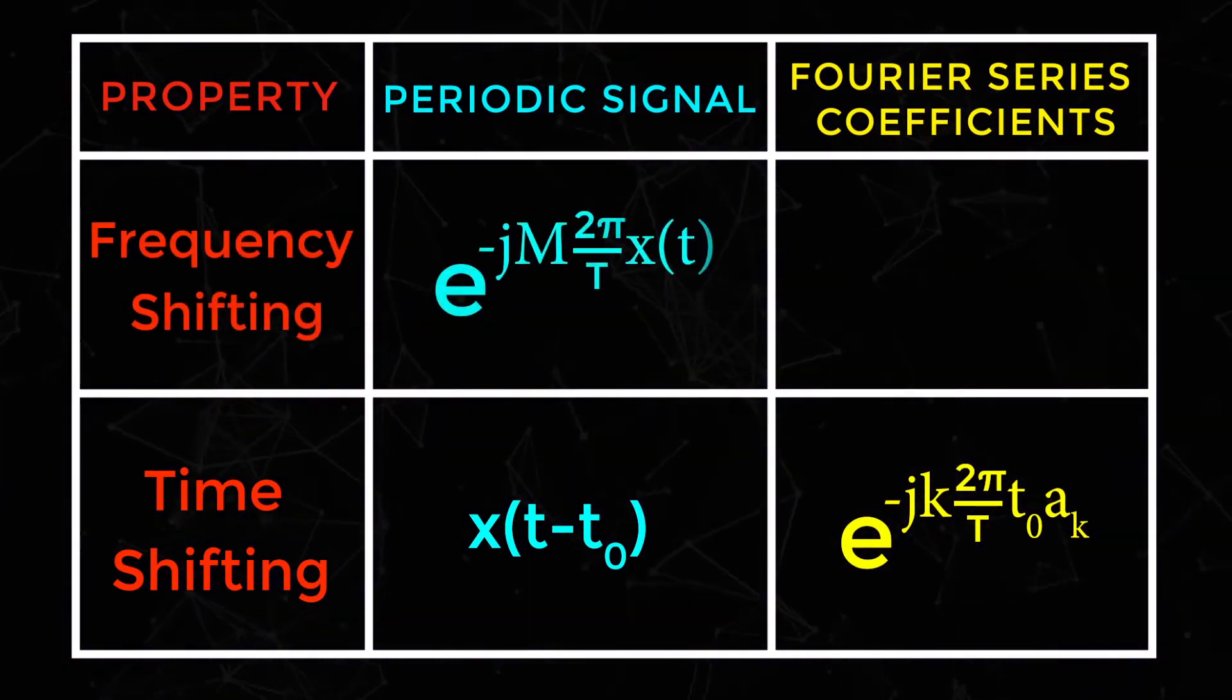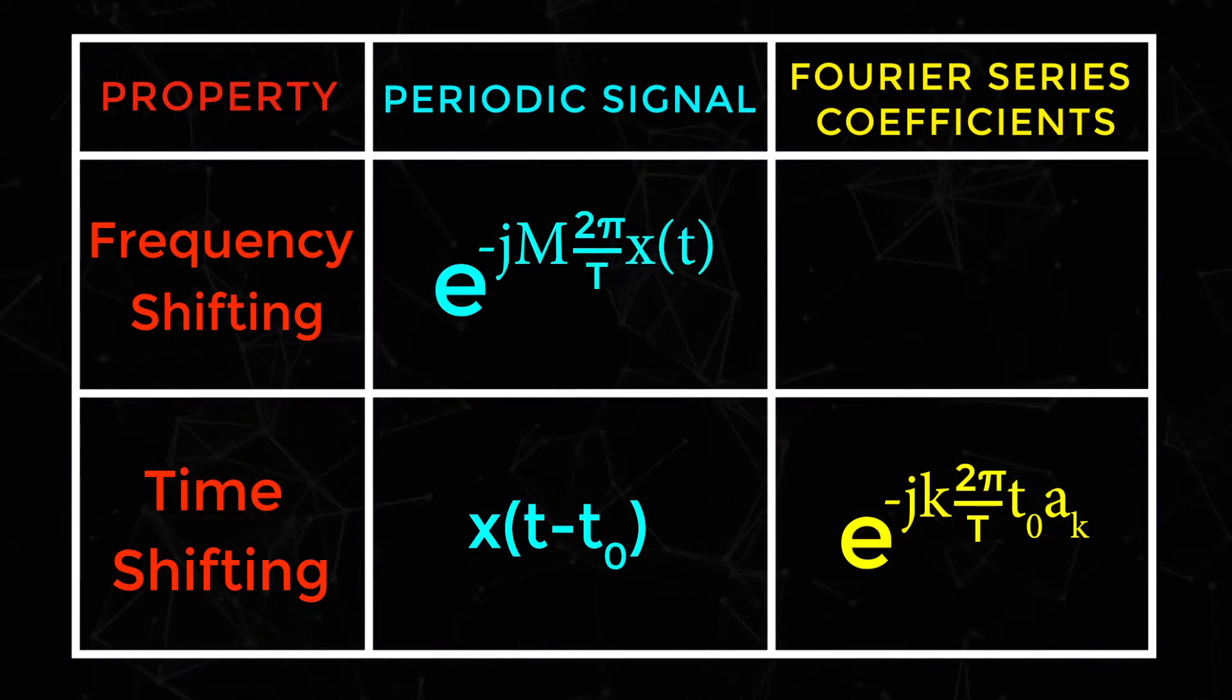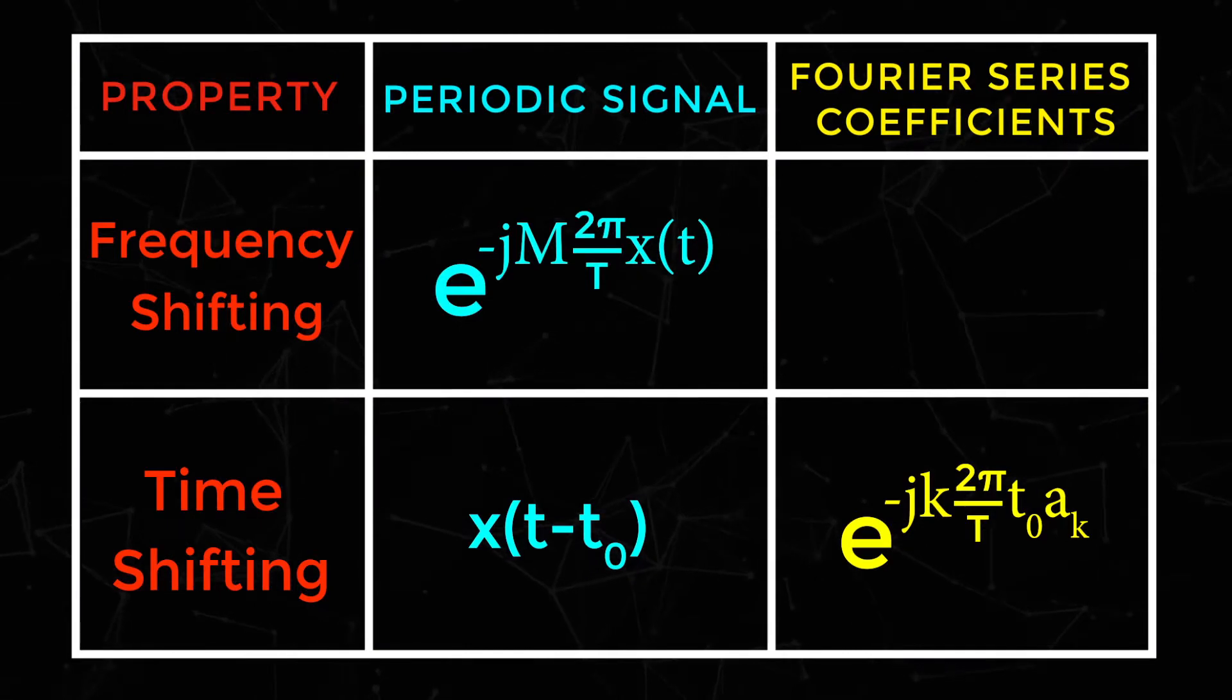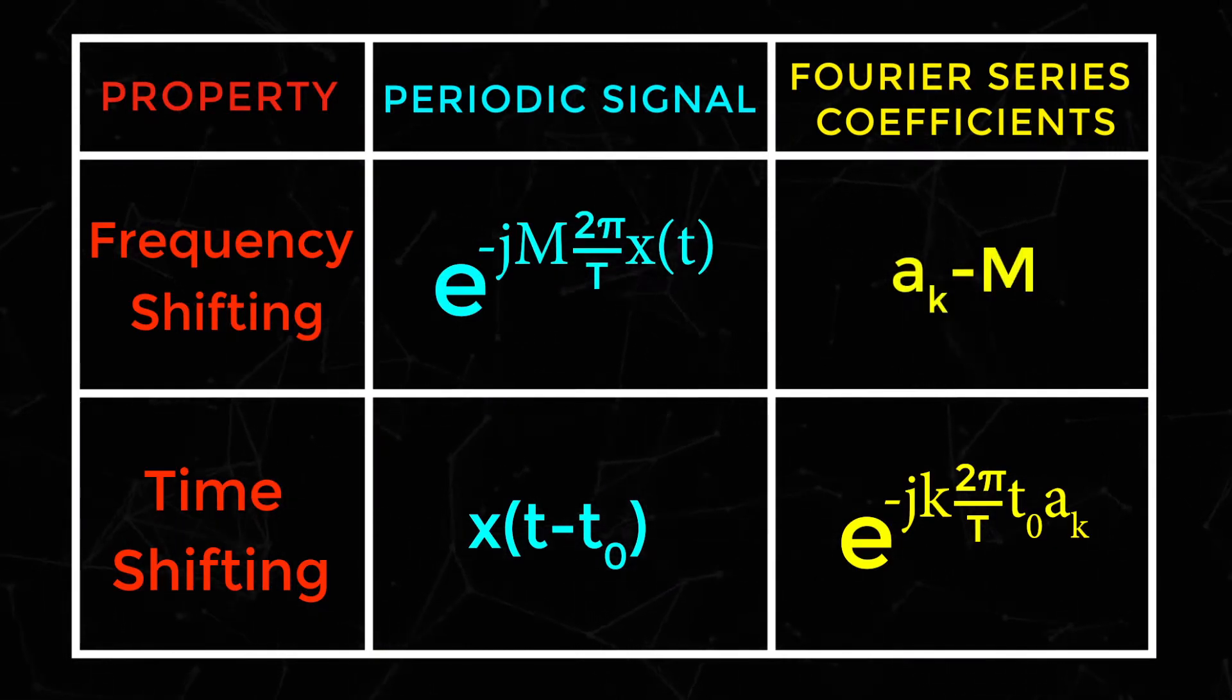Frequency shifting: Exponential of minus jM into 2pi by T into x of t is for periodic signal. For Fourier series, ak minus M.